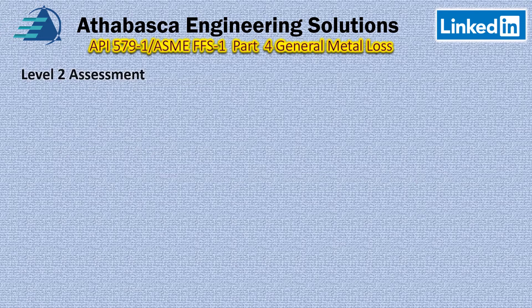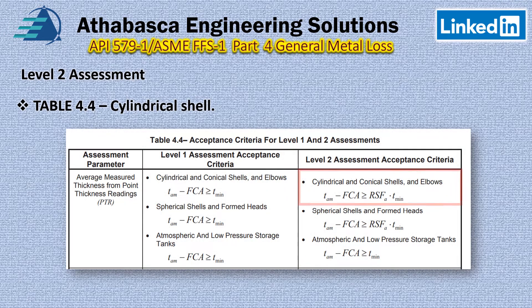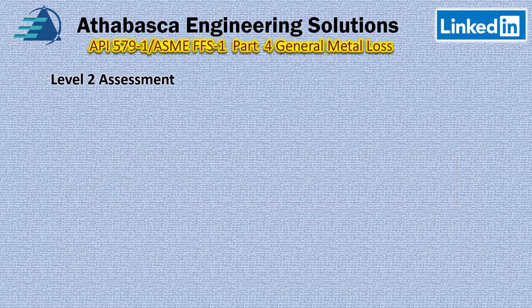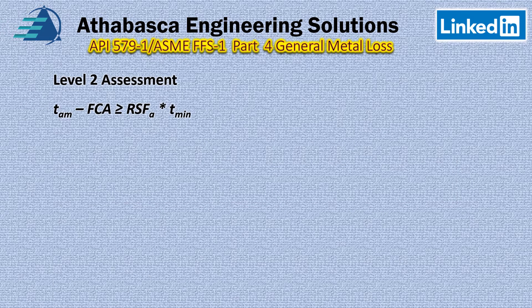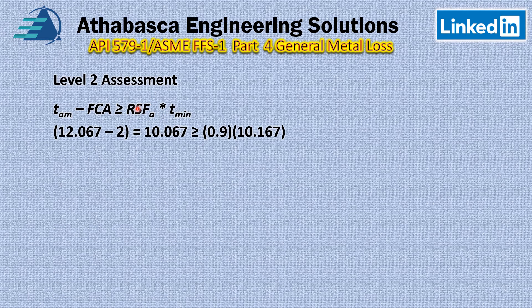We didn't pass Level 1, so we continue to Level 2. We go back to Table 4.4, but this time we use the right-hand column expression. The key difference is something called the RSF factor — the Remaining Strength Factor. We'll talk more about that on the next slide as we continue our Level 2 assessment.